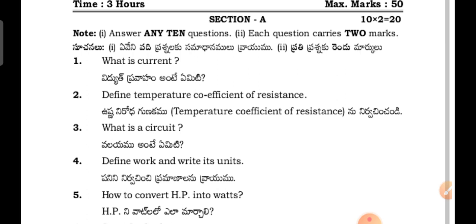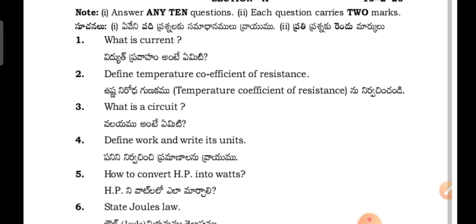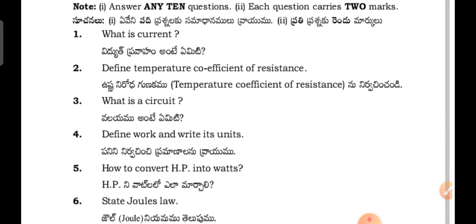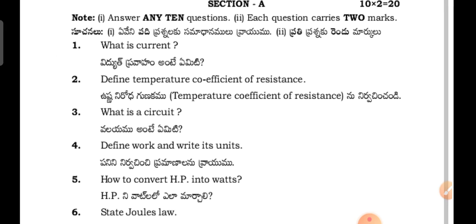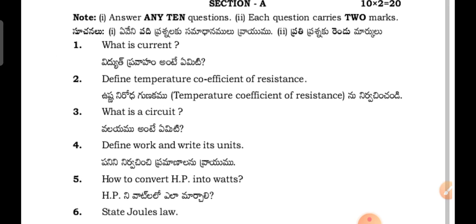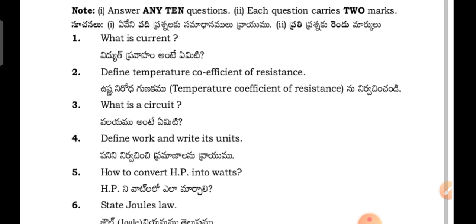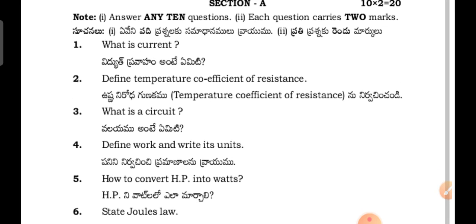In Section B, they will give 10 questions. Out of 10, you have to attend any required number. So in Section A, 15 questions will be there; out of 15, you attempt as required. This is the format for this year's exam with the 70% choice applied.